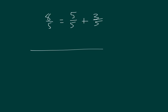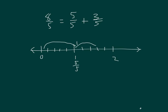Let's draw that. Here's 0, here's 1, and then here's fifths: 1, 2, 3, 4 fifths. So 1 is equal to 5 fifths. Let's go to 5 fifths first. And then for 2: another 3 fifths — 1, 2, 3 fifths. So that equals 8 fifths. So 5 fifths plus 3 fifths does equal 8 fifths, which also equals 1 whole and 3 fifths.